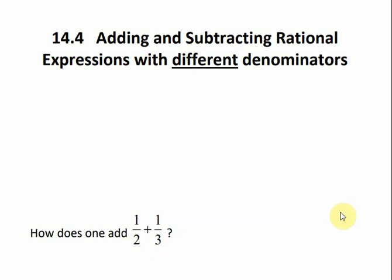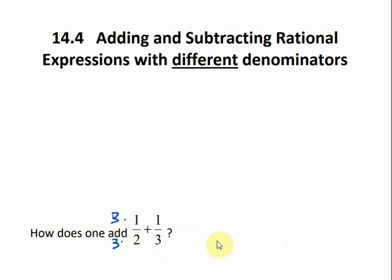We would need to get a common denominator. So what is the least common denominator between 2 and 3? That means what is the smallest number that both 2 and 3 can divide into evenly? Well, the smallest number that can be divided by 2 and 3 would be 6. So then we ask ourselves, what do we need to multiply 2 by to get 6? It would be 3. And remember, when dealing with fractions, whatever we do to one part of the fraction, we have to do to the other part. So since we're multiplying the denominator times 3, we also need to multiply the numerator times 3. So that would give me 3 times 1, which is 3, over 3 times 2, which is 6.